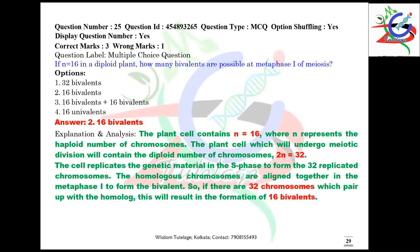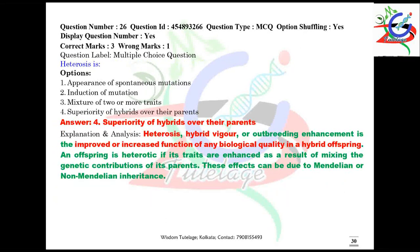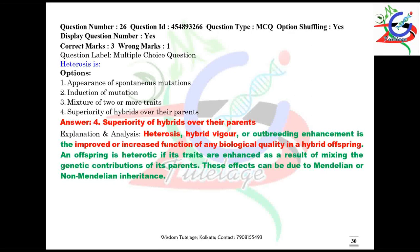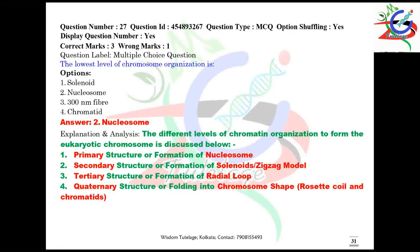Question number 26: heterosis is nothing but the superiority of hybrids over their parents. Question number 27: the lowest level of chromosome organization is obviously the nucleosome.